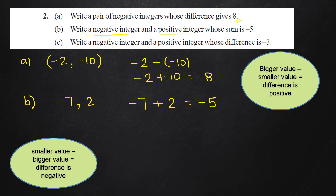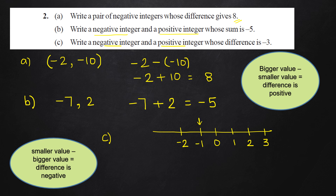Next, part C: write a negative integer and a positive integer whose difference is minus 3. That means the gap between these two numbers on the number line should be just 3 units. If I roughly draw a number line, you'll see we have very limited answers. We cannot include 0 because 0 is neither positive nor negative. If I pick minus 1, the next number at 3 units away is 2.